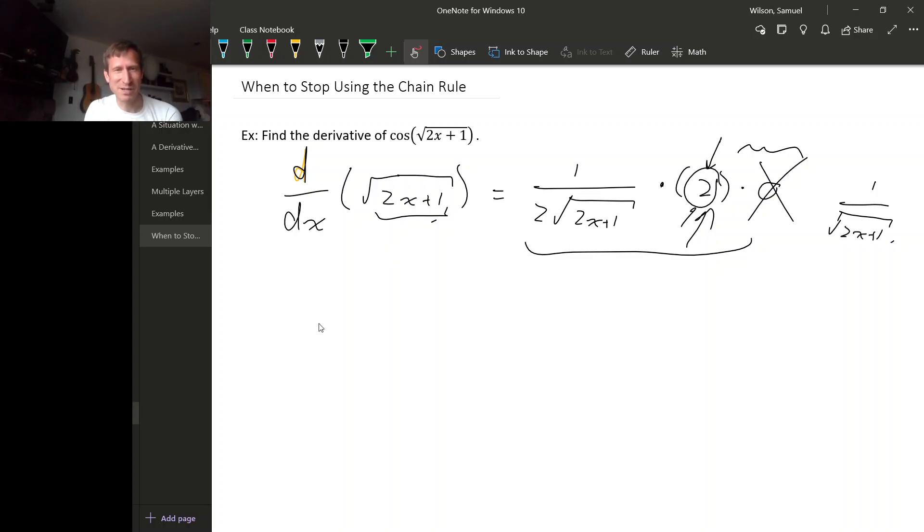So what is the inside piece? Well, if you look at this function, it's the square root of 2x, so if we sort of punch a hole for where the variable is, it's like that.